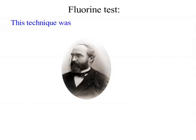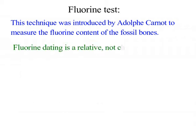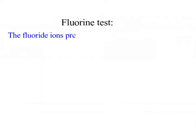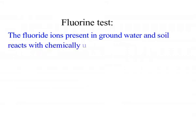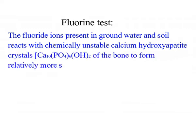The second relative dating technique is fluorine dating. This technique was introduced by Adolf Karmot to measure the fluorine content of fossil bones. Fluorine dating is a relative non-chronometric or calendrical dating technique. The fluorine ions present in groundwater and soil react with chemically unstable calcium hydroxyapatite crystals present in the bone to form relatively more stable fluorapatite crystals.